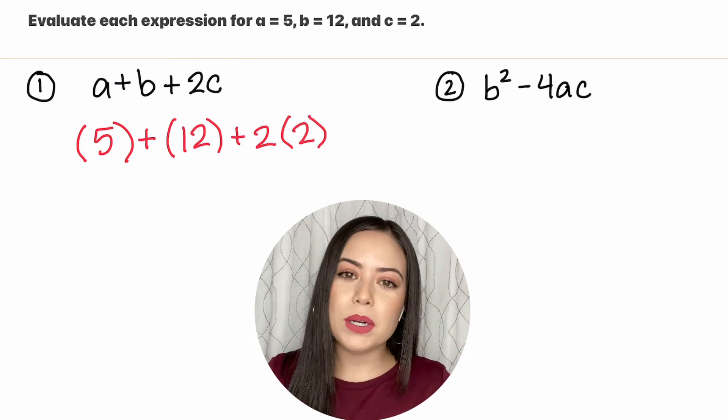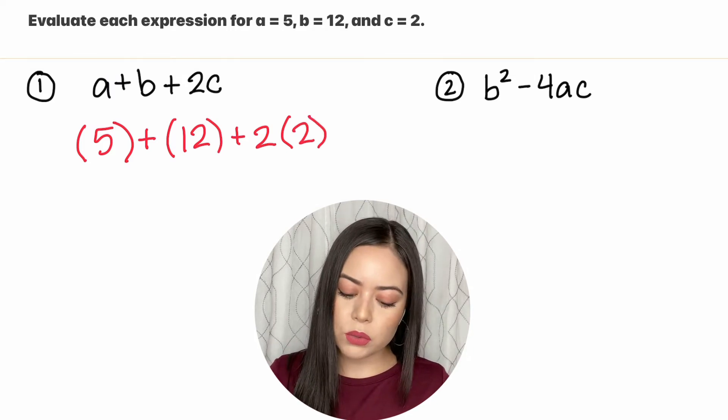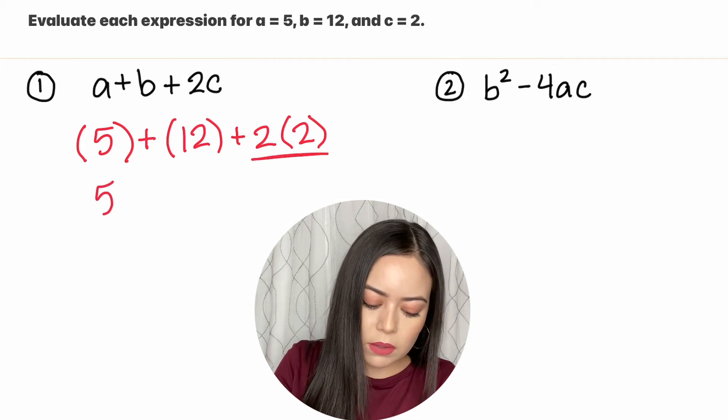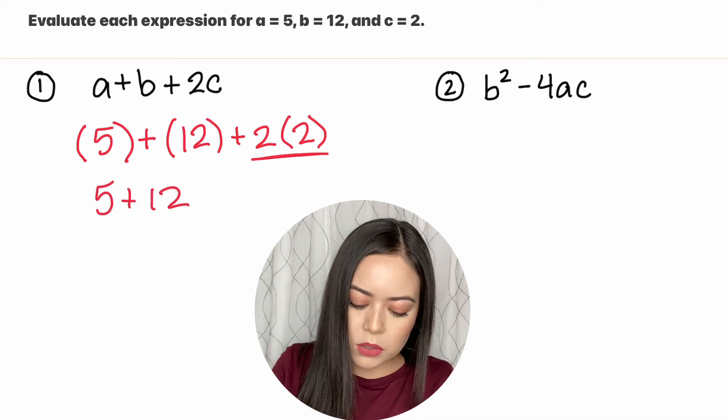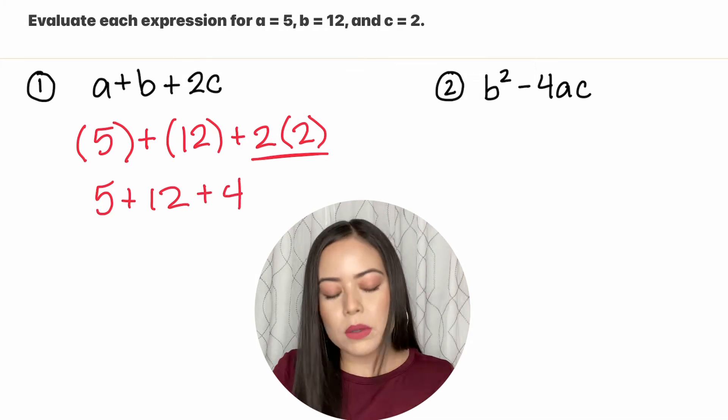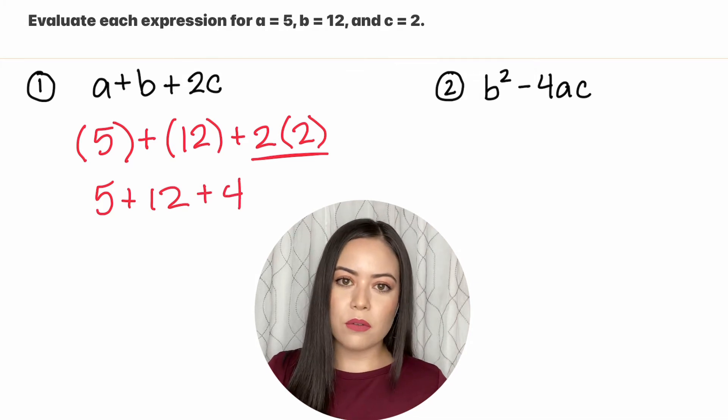With order of operations we need to multiply first. So let's do the 2 times 2, this portion. So we're going to leave the others as is and then 2 times 2 is 4.